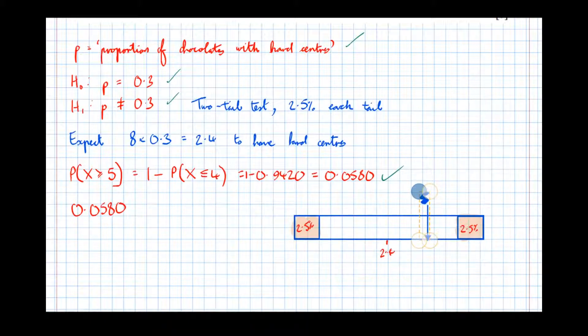Therefore, 0.0580 is bigger than 0.025. Now it's important that you compare it to the significance level at each tail and not the total significance level in a two-tail test, otherwise you lose a mark.